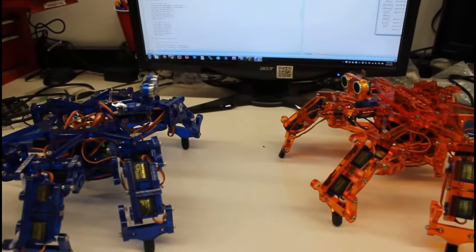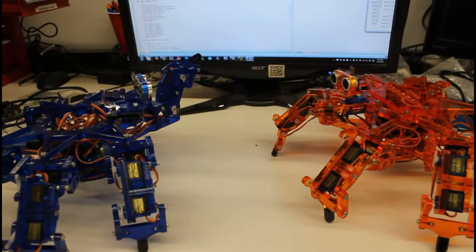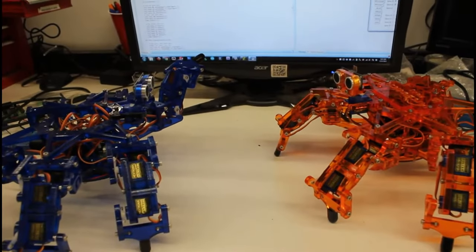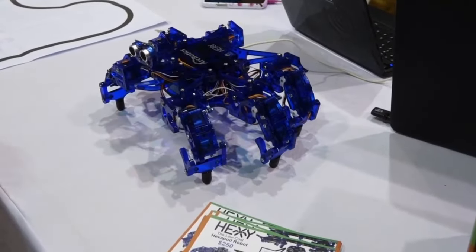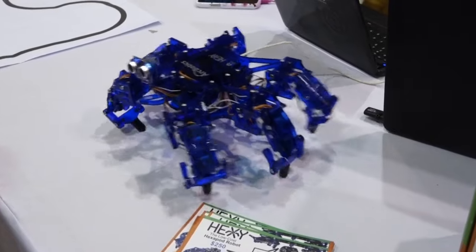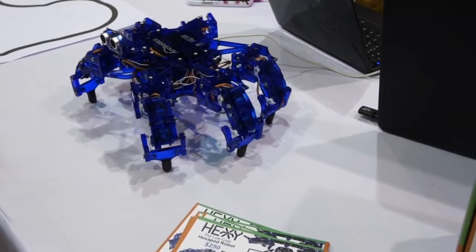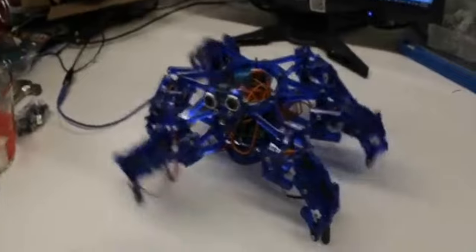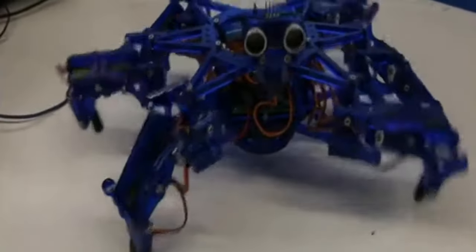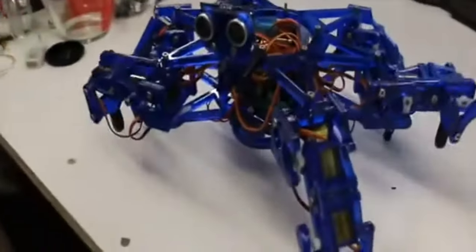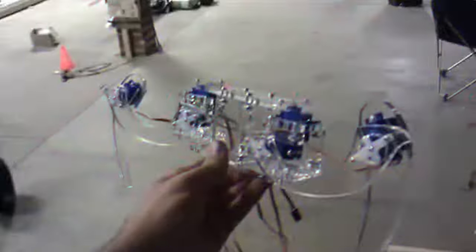Hexi the Hexapod sees its world using an ultrasonic distance sensor attached to a servo. It additionally comes with a Bluetooth module for wireless communications with your PC or other device. This robot requires assembly. All electronics are preassembled so no soldering is needed. It is easy to assemble and comes with everything you would need to bring together your very own Hexi.